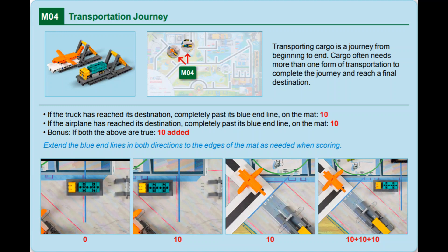In this video, we'll show you two solutions for Mission 4: Transportation Journey for this year's Cargo Connect game—one with the Spike Prime and one with the EV3. For this mission, teams must launch either the truck, the plane, or both completely over their respective blue lines to score points.